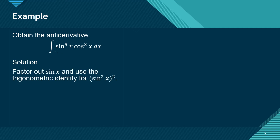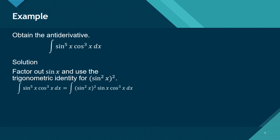We will factor out one sine of x from this function. You will be left with sine of x raised to the fourth. Sine of x raised to the fourth can be written in a specific way — the reason I chose to write it this way is because I want you to see where the Pythagorean identity will come in. The square of sine of x is just 1 minus the square of cosine of x, so I just rearranged the function.